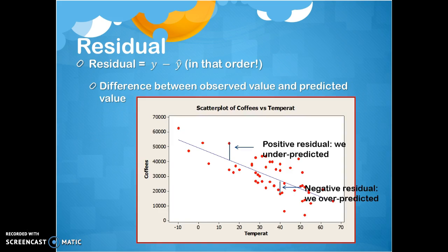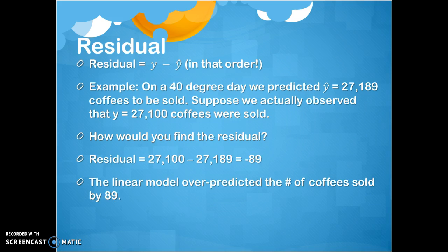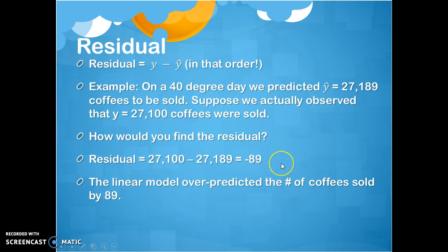What if there was an actual data point of 40 degrees and 27,100 coffee sold? The actual value is 27,100 coffee sold on that day. To calculate the residual, we take the observed value 27,100 and subtract the predicted value — y minus y-hat, observed minus predicted — and we get negative 89. So our residual for this data point is negative 89 coffee sold. The linear model over-predicted, was too high by 89 units.